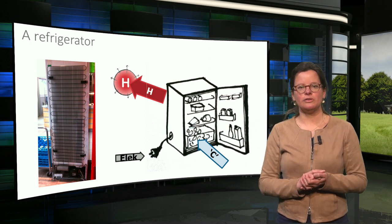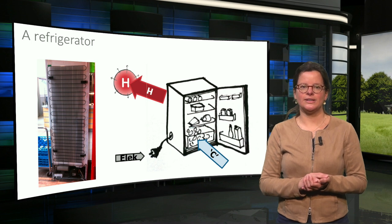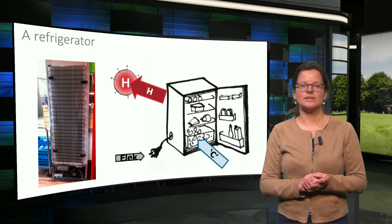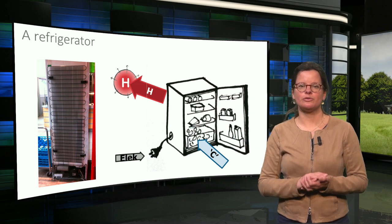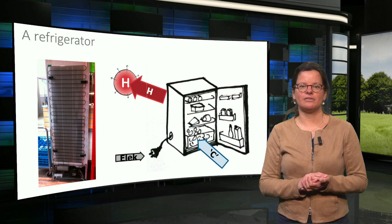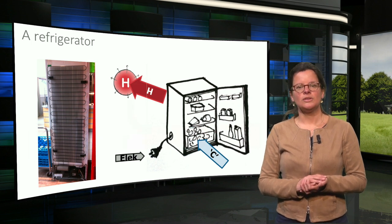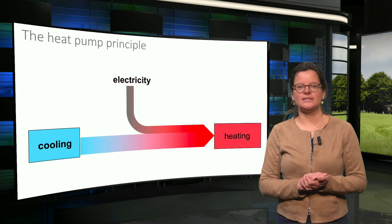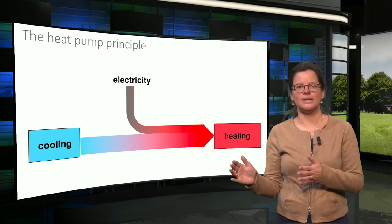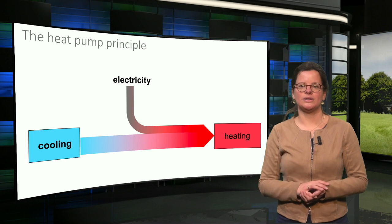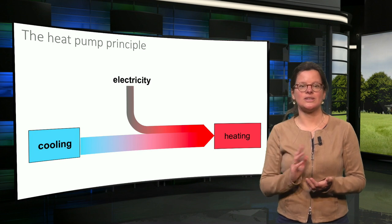In the examples of the air conditioner and the refrigerator, the cooling function of the device is used and the heat is disposed. But the same principle can be used for heating purposes, by using free heat from the environment such as air. So, a heat pump is a device that transports heat from a colder body to a warmer body by adding a little bit of high quality energy such as electricity.